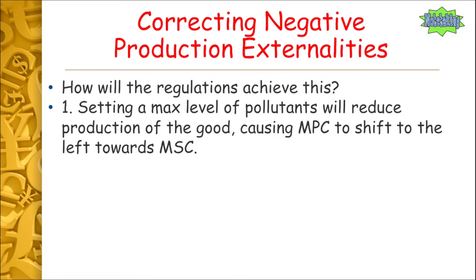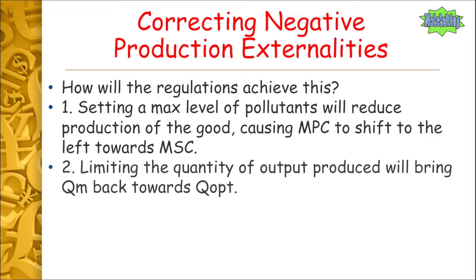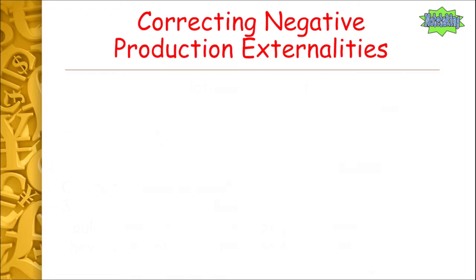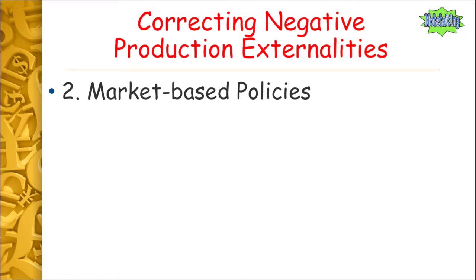How do regulations achieve this overall aim? By setting a maximum level of pollutants, it reduces the amount of production of the good — the firm can only pollute so much — causing our marginal private cost curve to shift leftwards towards the marginal social cost curve. Limiting the quantity of output will bring QM back towards Q-opt. And if polluting firms have to install green technologies, that increases the cost of production — one of the determinants of supply — meaning they will supply less, shifting our MPC towards our MSC.